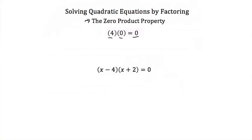If we have these two binomials, x minus 4 and that's multiplied by x plus 2, then the zero product property tells us that if we want this multiplication to equal zero, then we can treat these two binomials separately. We can set x minus 4 equal to zero, and we can set x plus 2 equal to zero.